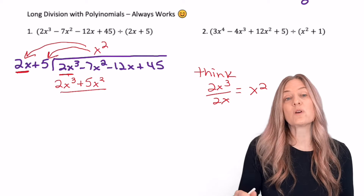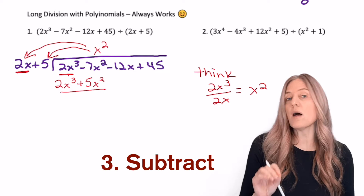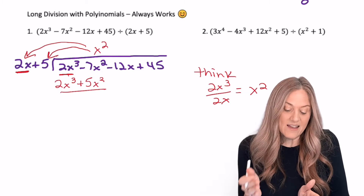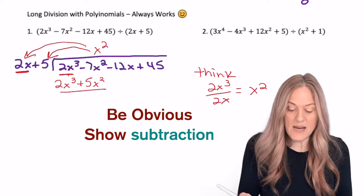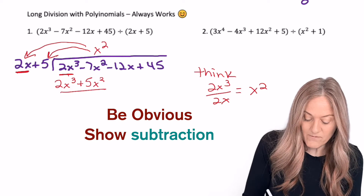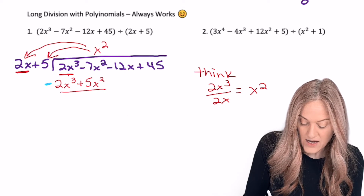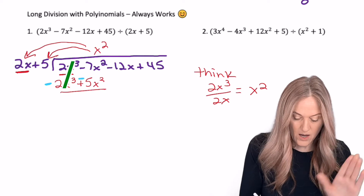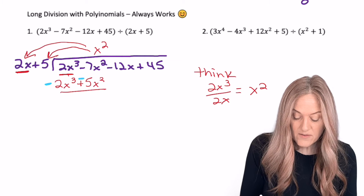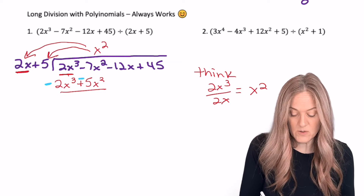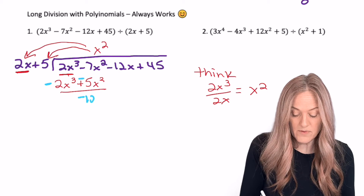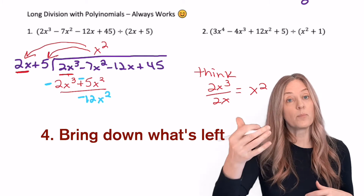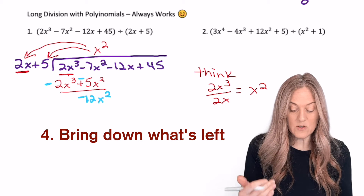The next step was to subtract. The most common error here is to forget to subtract that second term — to distribute the minus sign. Let's make sure that we're very obvious with those subtraction signs. So 2x cubed minus 2x cubed — gone. That's what we wanted. Negative 7x squared minus 5x squared, so negative 12x squared. Then the next step in the process is to bring down. So we're going to bring down that 12x.